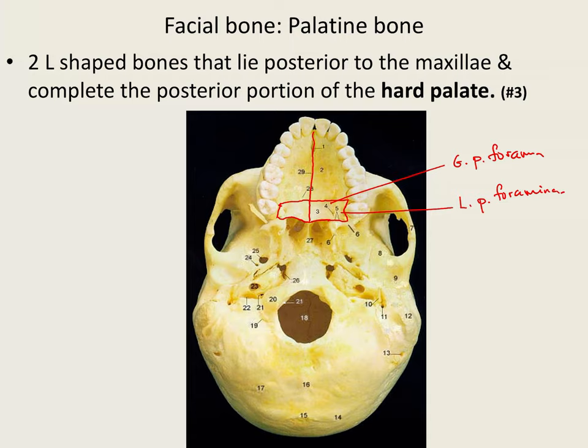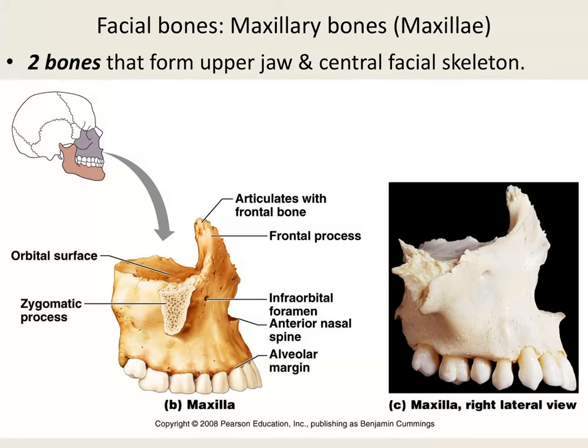Now let's move on to the maxillae. You have two maxillae, and this is a good place to start because it forms the anterior part of your hard palate. The maxillae form most of the roof of your mouth, and the part that forms the roof of your mouth is called the palatine process — also called the palatal process.